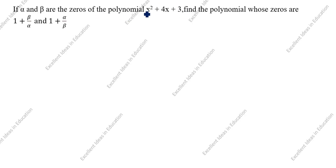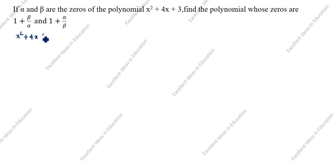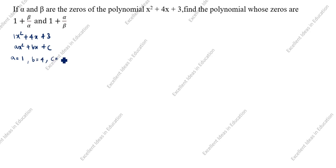The given polynomial is x squared plus 4x plus 3. We will find the new polynomial as per the given data. Comparing with the standard format ax squared plus bx plus c, the value of a is 1, b is equal to 4, and c is equal to 3.